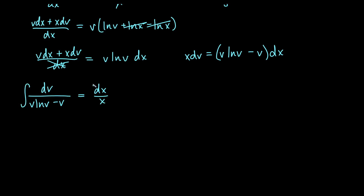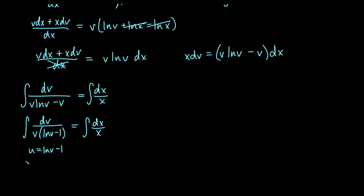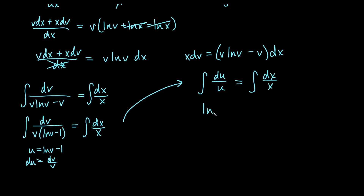We integrate both sides. The right side is a standard log rule giving ln of x. For the left side, we factor v from the denominator: integral of dv over v(ln v minus 1). We use u substitution with u equals ln v minus 1, so du equals dv/v. This transforms the integral into du over u, which equals ln|u|. So we get ln|u| equals ln x plus C.